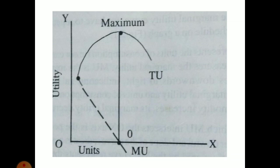This can be clearly seen in the diagram, where we have drawn both curves: the marginal utility curve and the total utility curve. MU represents the marginal utility curve and TU represents the total utility curve. You can see that the MU curve goes on diminishing throughout, reaches zero, and then becomes negative.